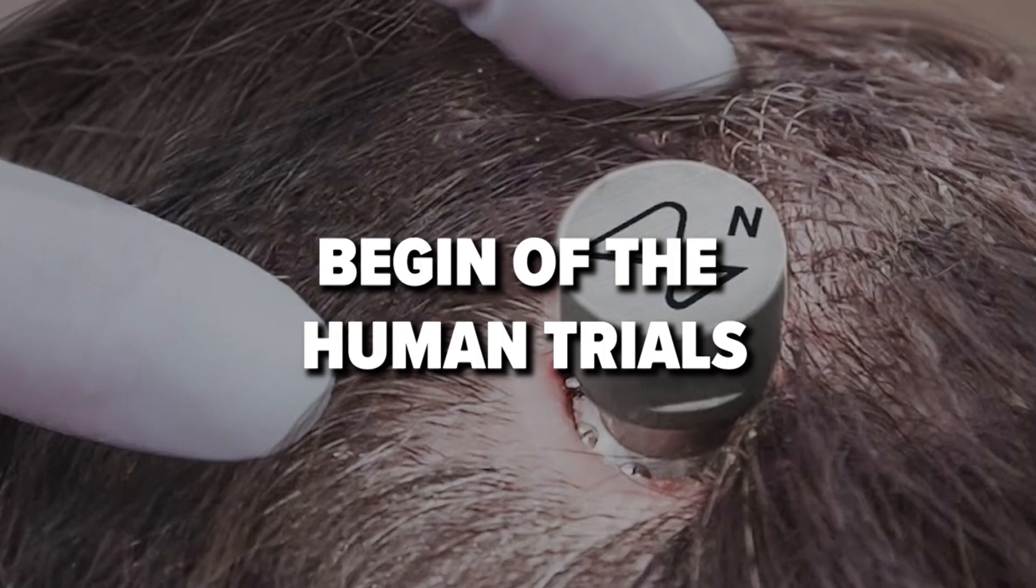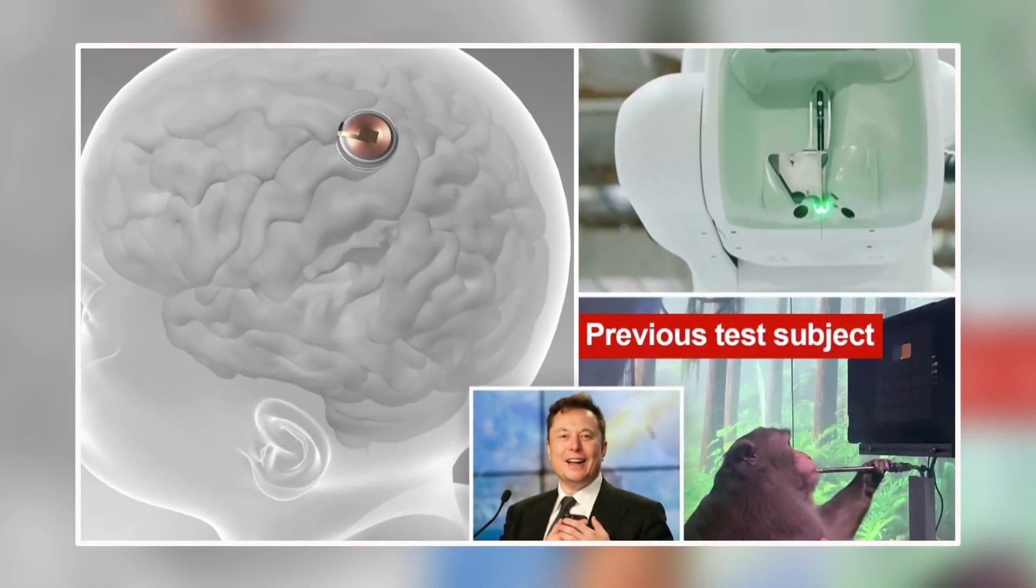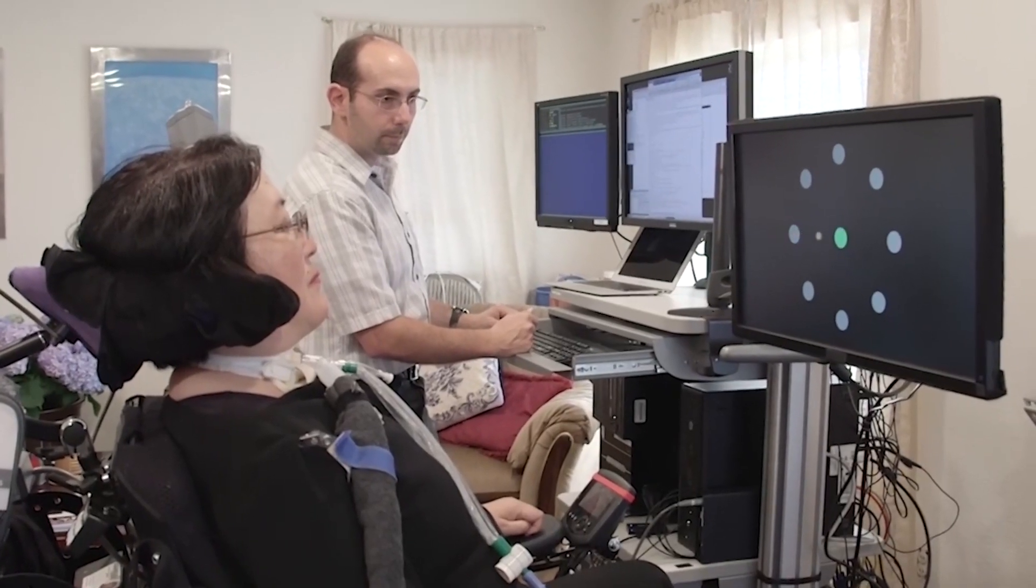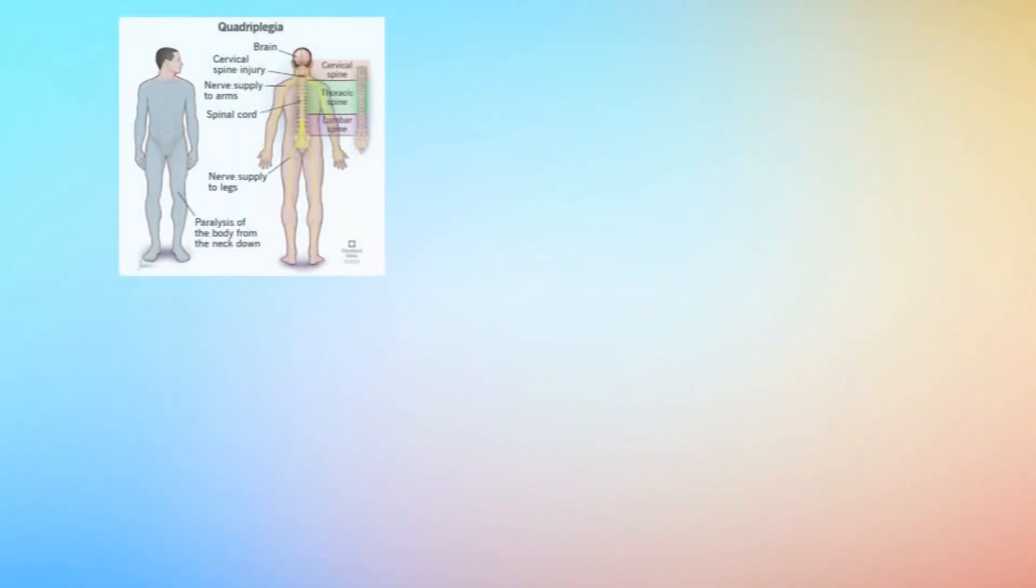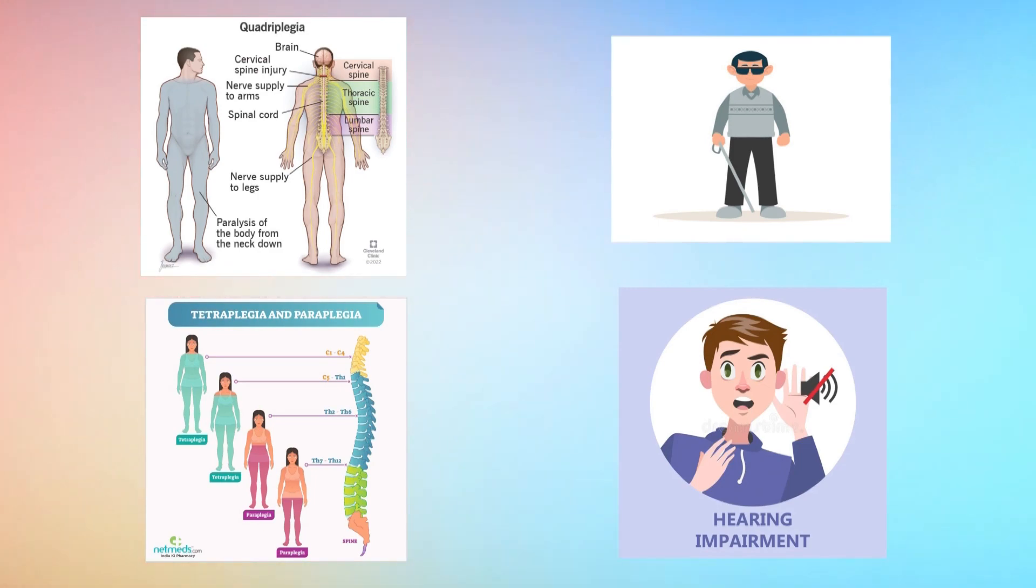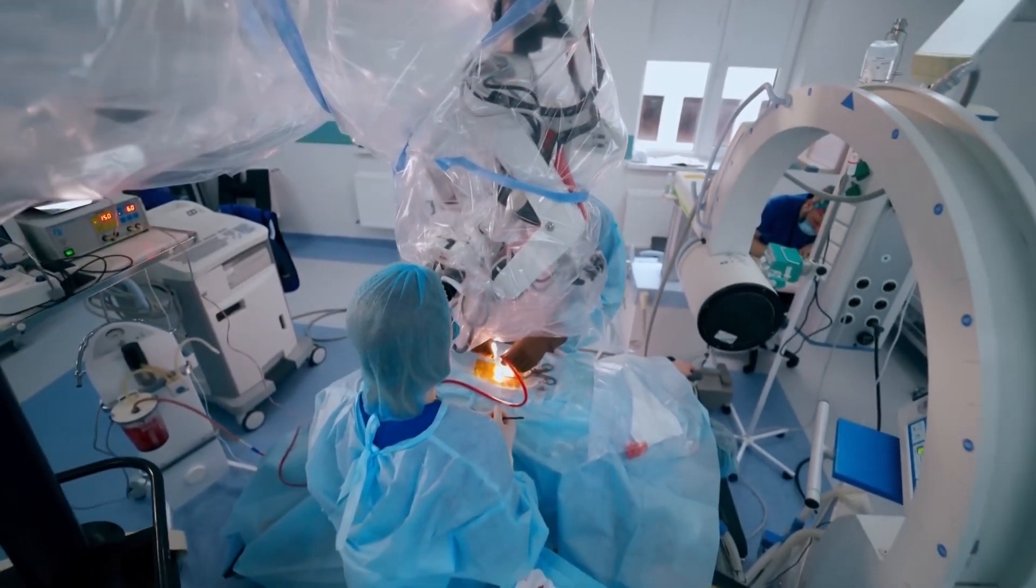After some trial and error, Neuralink finally opened up applications for human trials with the brain chip. But there are some pretty specific criteria. You've got to have a physical impairment like quadriplegia, paraplegia, blindness, or hearing impairment, among others. And you have to supply all the information about your medical history and treatments.